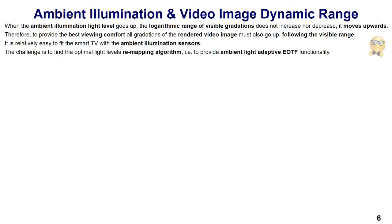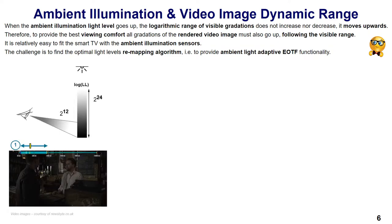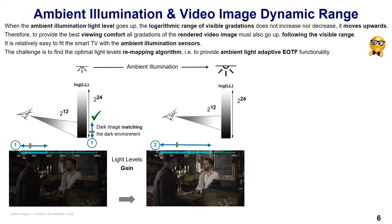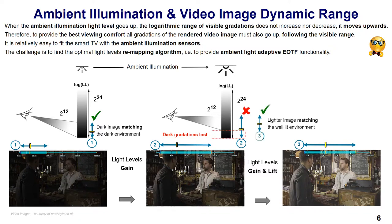When the ambient illumination light level goes up, the range of visible gradations moves upwards too. Therefore, all gradations of the rendered video image must also go up, matching the visible range. Adapting to the ambient light condition implies optimal light levels remapping by a smart display. In a dark home theater, a dark image looks fine. But to look good in a well-lit living room, all video image gradations, including the dark ones, have to come up.